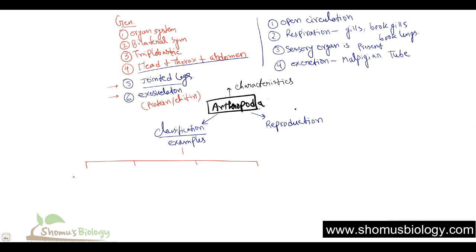The first group: they have two pairs of antennae and five or more pairs of legs. If that is the situation, then they are known as crustaceans. Example: shrimps and prawns.